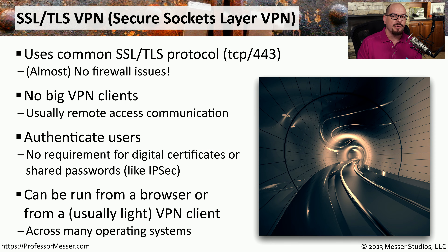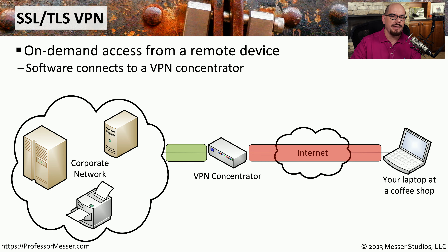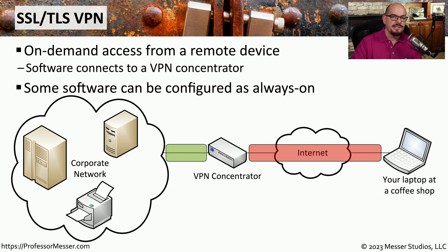There are even VPN clients that can run inside a browser itself, so you wouldn't need to install additional software to take advantage of VPN connectivity. An SSL VPN is the type of VPN you'd commonly use to communicate from a laptop over a public network like the internet to a VPN concentrator, which then decrypts the traffic and sends it into the corporate network. Some SSL VPNs can be configured as always-on, so when you start up your laptop it automatically connects to the VPN concentrator, and any traffic you send will always be secured.